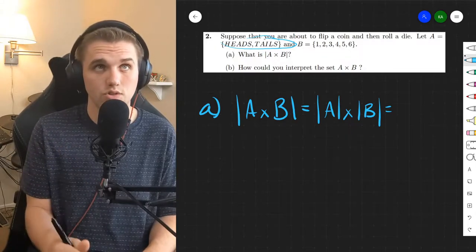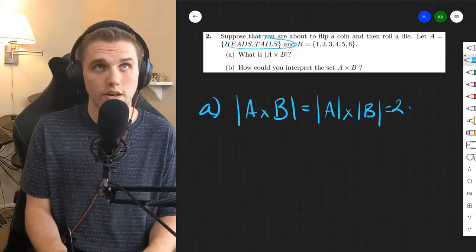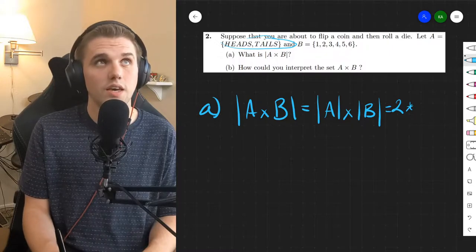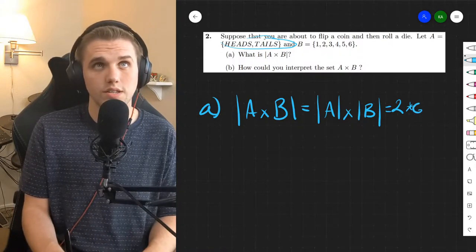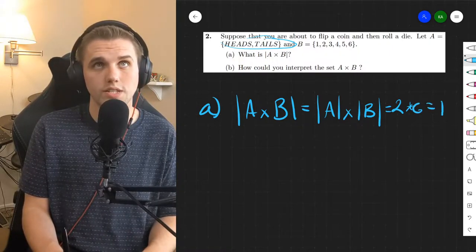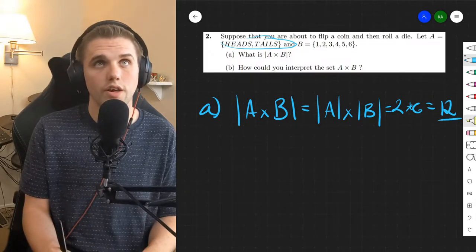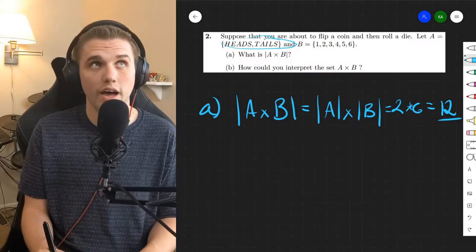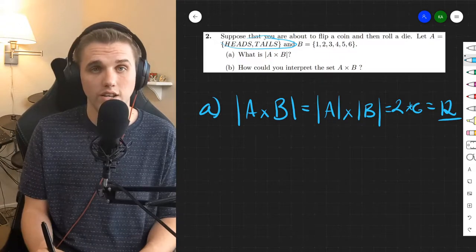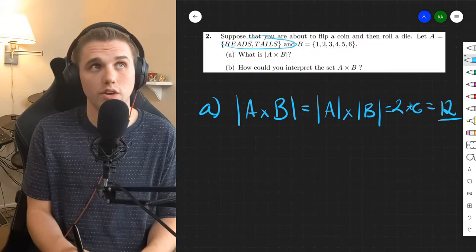There's only heads and tails, those are the only two objects. And the size of B is 6, so 2 times 6 is 12. And so that's the number of elements in A cross B. That's the first way of solving it.